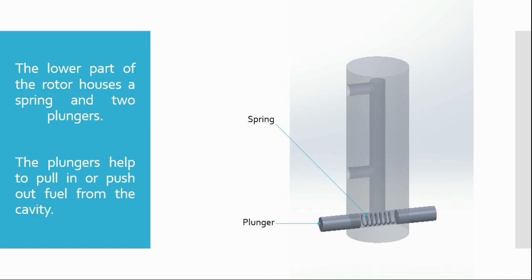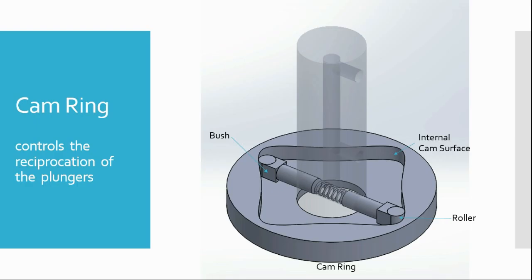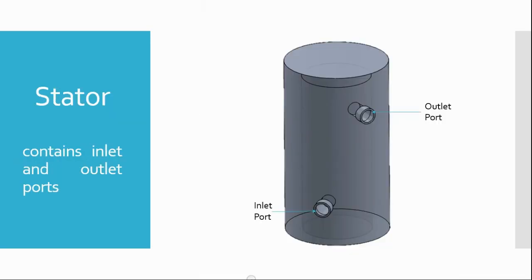The fuel is drawn in or forced out of the cavity as per the movement of the plungers. The cam ring controls the movement of the plungers via a roller and a bush at each end. Over the rotor there is a stator that contains inlet and outlet ports for the fuel.